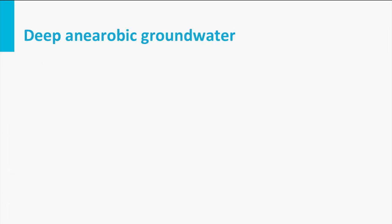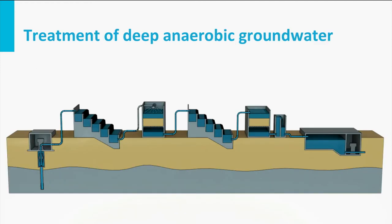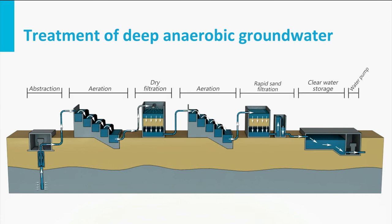The last treatment scheme is for deep anaerobic groundwater. Both oxygen and nitrate are absent in this groundwater, and organic material is broken down with sulphate as an oxidant. In deep anaerobic groundwater, iron, manganese, and especially ammonium are present in high concentrations, in addition to hydrogen sulphide and methane. For the removal of ammonium, a lot of oxygen is required — even more than can be dissolved in the water during aeration, in other words more than the saturation concentration. To prevent anaerobic conditions in the sand filter, double submerged filtration or dry filtration can be applied, followed by regular submerged filtration in case of high ammonium concentrations.